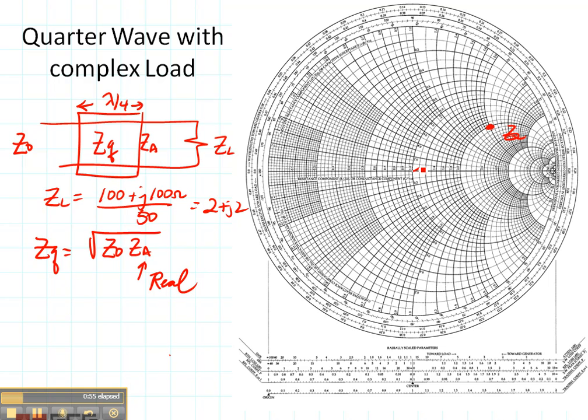So here's my load and it's not strictly real at the moment. It has this imaginary component. In order to make it strictly real I want to get to this axis. Any place on this axis where the imaginary part is zero.